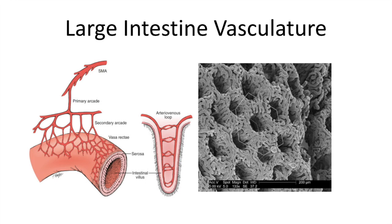In the picture done by a scanning electron microscope on the right, you can see the surface of the vascular bed from the view of the lumen of the large intestine. The vasculature forms very neat and highly organized structures. It is very dense and you can also see the crypts.